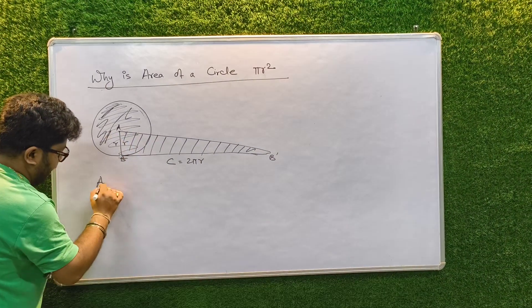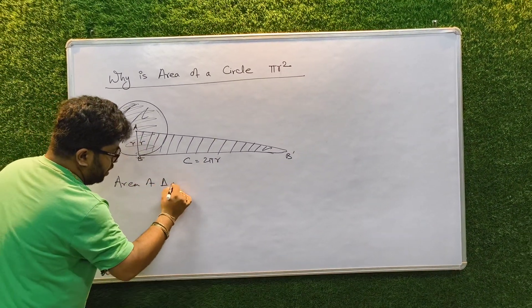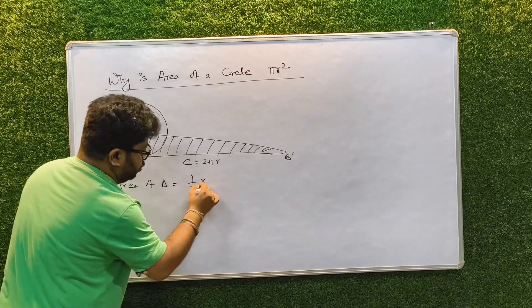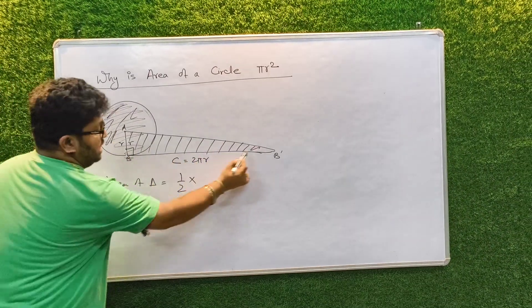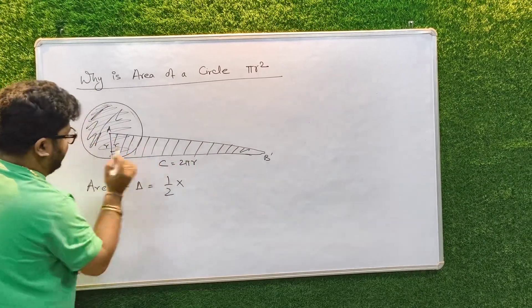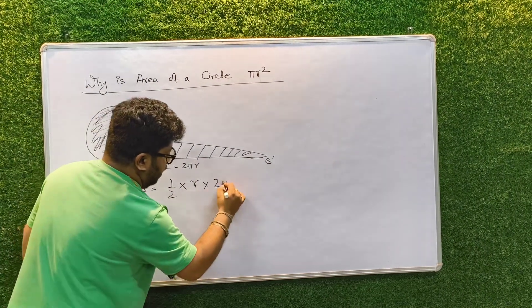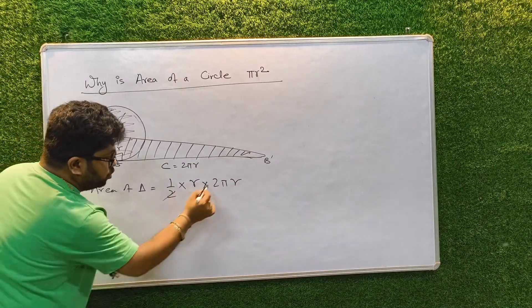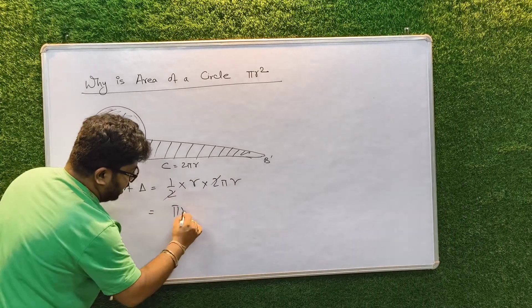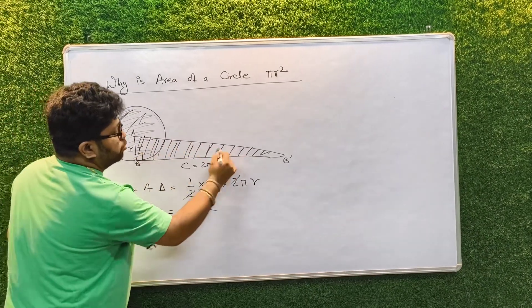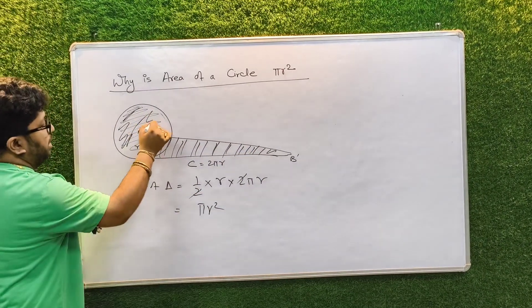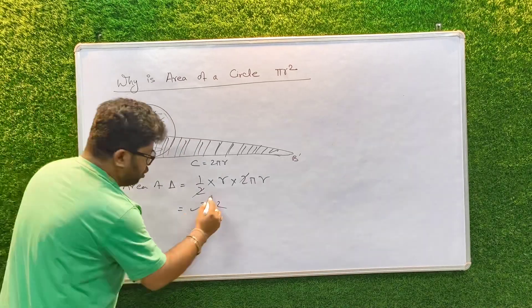So area of the circle is also pi r square.